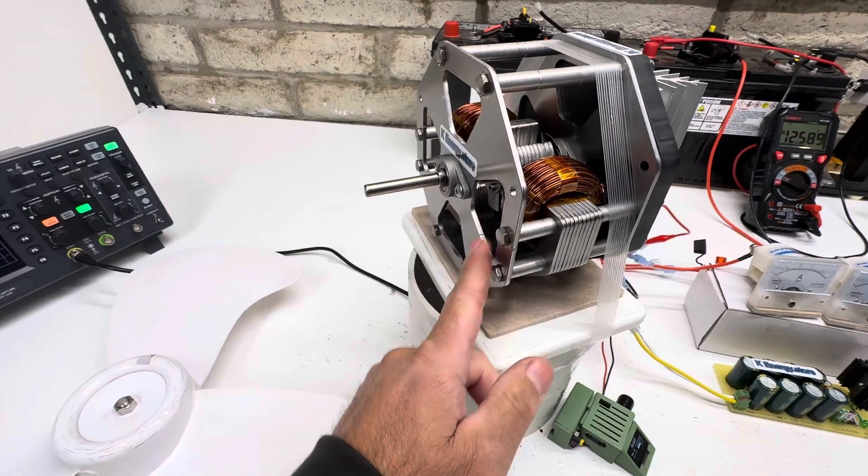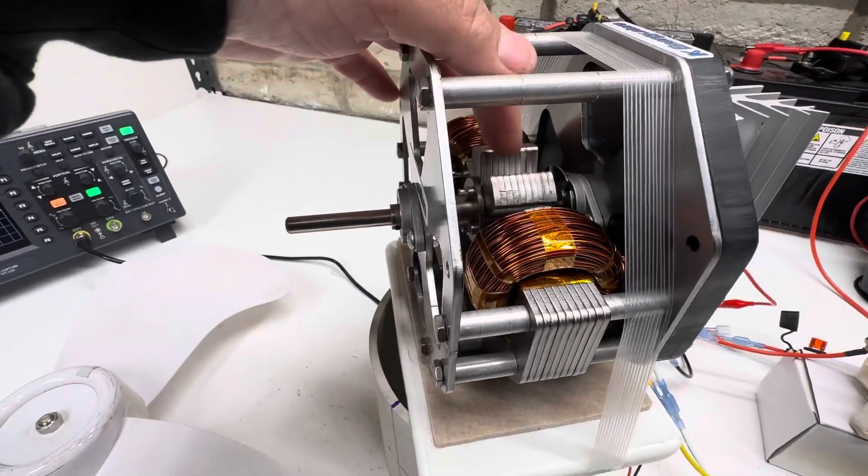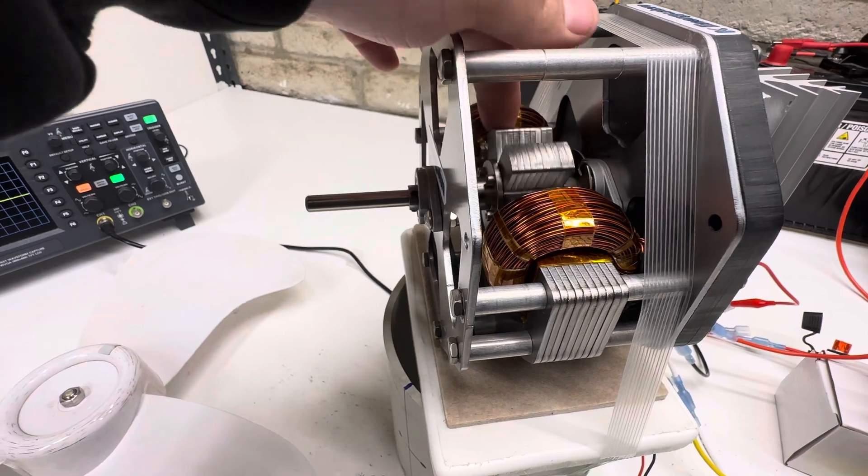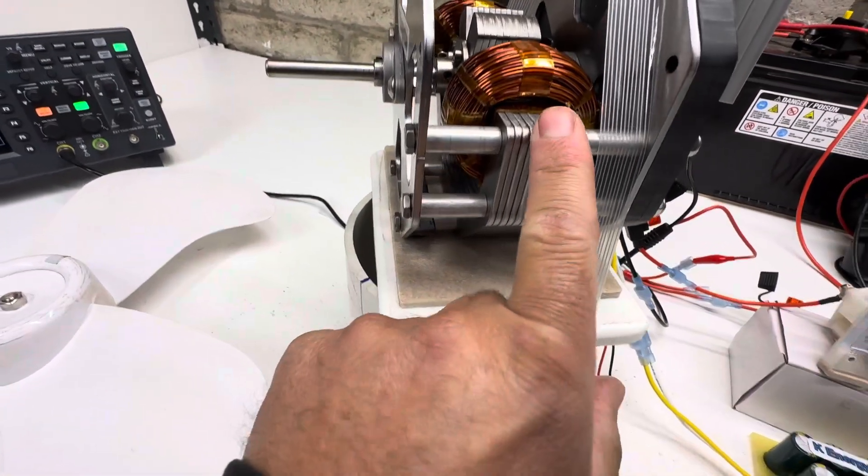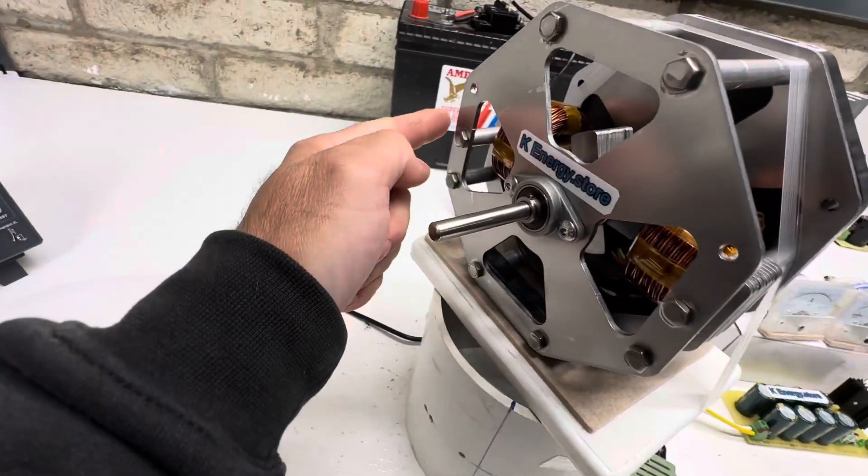If you look at the rotor here, we have six poles. It's just all laser-cut, stacked together. This is ten pieces, and the stator goes all the way around to the other side as a magnetic loop.